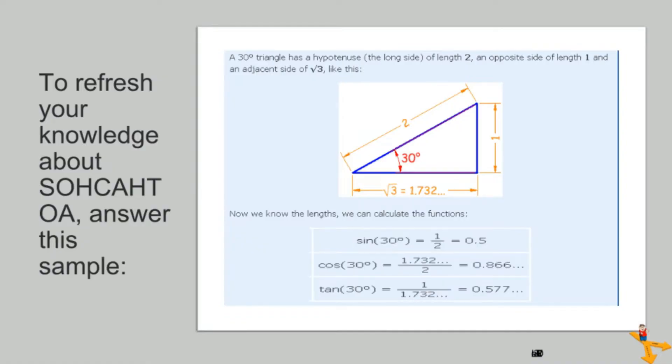For sine, we get 0.5 by dividing opposite magnitude of 1 with the hypotenuse magnitude of 2. For cosine, we get 0.866 by dividing the adjacent magnitude of square root of 3 with the hypotenuse magnitude of 2. Lastly, for tangent, we get 0.577 by dividing the opposite magnitude of 1 with the adjacent magnitude of square root of 3.